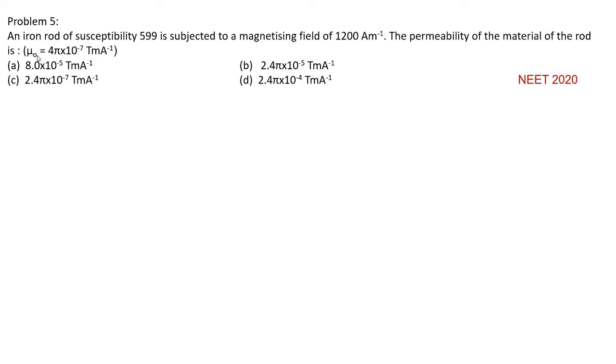you are given the value of mu naught, permeability of free space, as 4 pi into 10 to the power of minus 7 tesla meter per ampere. Four options are given.